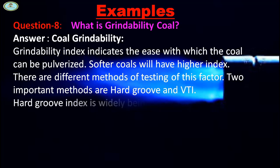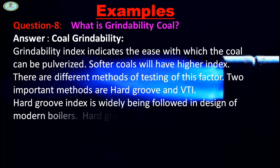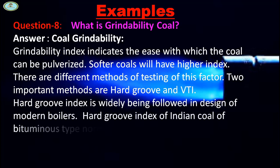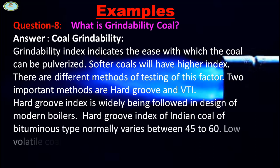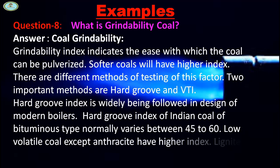Two important methods are Hardgrove and VTI. Hardgrove index is widely being followed in design of modern boilers. Hardgrove index of Indian coal of bituminous type normally varies between 45 to 60. Low volatile coal and anthracite have higher index, while lignite has a high grindability index.